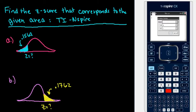So I would type in the area to the left, the .1562, and I would leave the 0 and the 1 because I'm looking for a z-score, and remember the z-score is the standard normal, and then I hit Enter.